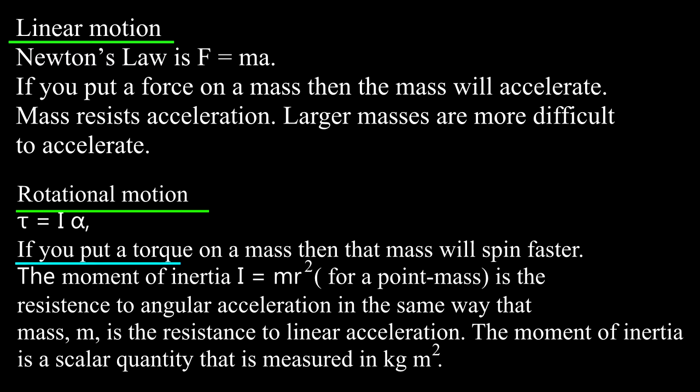If you put a torque on a mass, then that mass will spin faster. The moment of inertia I equals mr squared for a point mass is the resistance to angular acceleration, in the same way that mass m is the resistance to linear acceleration. The moment of inertia I is a scalar quantity measured in kilograms times meters squared.